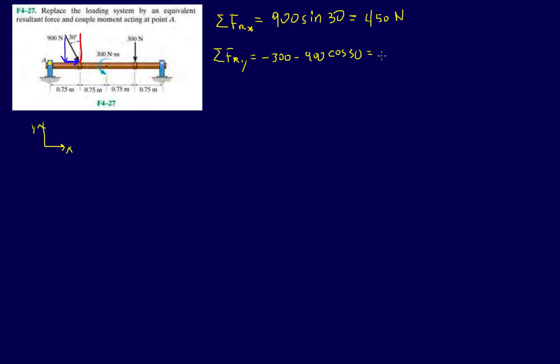Minus 300 minus 900 cosine 30, that looks like minus 1079.4.